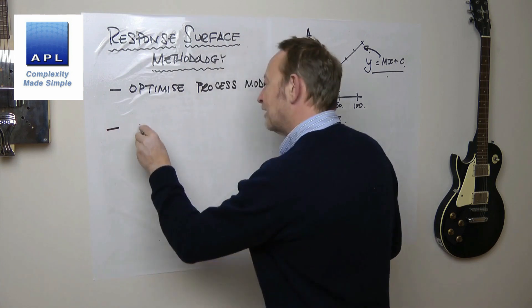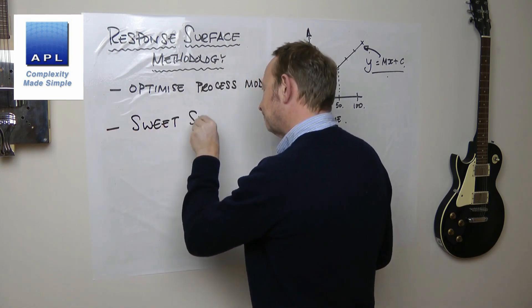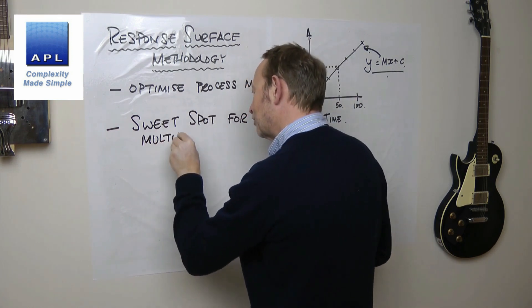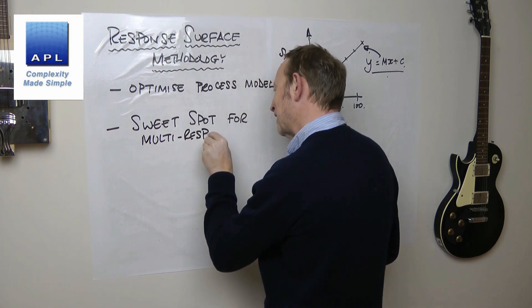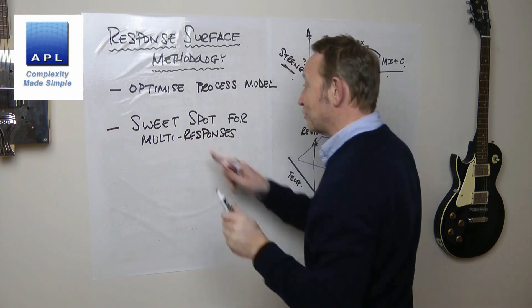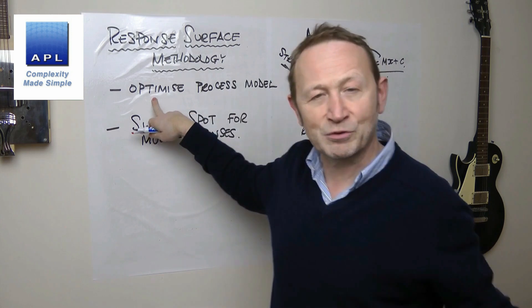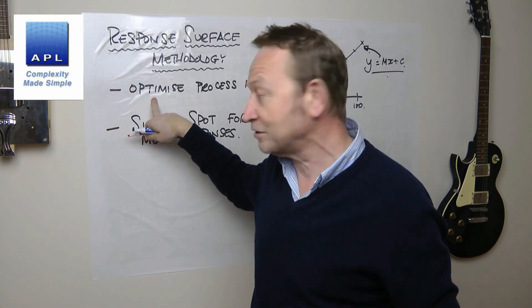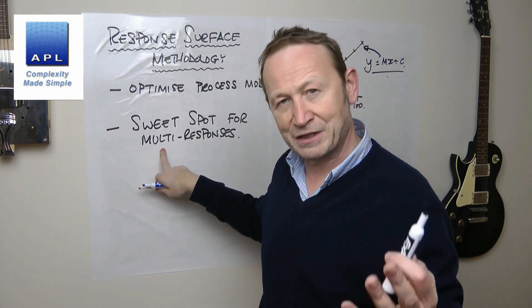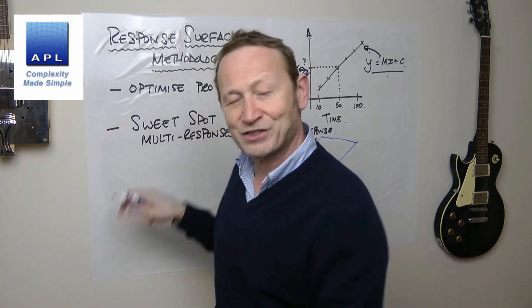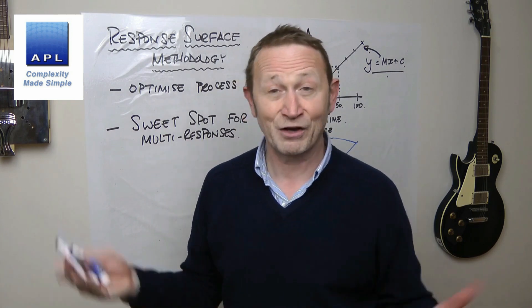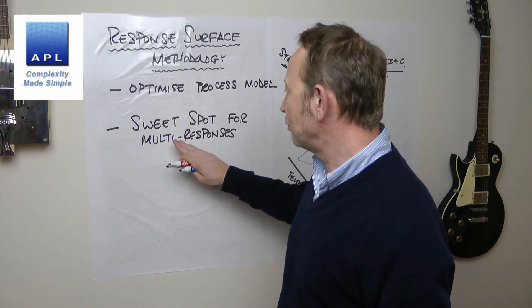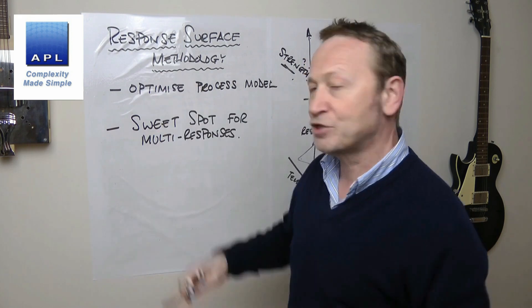Reason two is to find a sweet spot for multiple responses. Today the computer does this — the software will find an optimized spot. I can just say to the computer, take me to the highest place in this model. Also, if you have Minitab, it'll tell you where the sweet spot is, or tell you the sweet spot doesn't exist. The technique for hitting the sweet spot was to use a response surface.